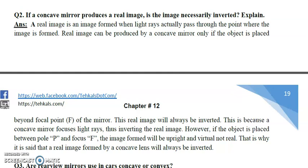The real image formed by a concave mirror will always be inverted. This is because the concave mirror focuses light and inverts it. However, if the object is placed between the pole and the focus, the image formed will be upright and virtual, not real. That is why we say that the real image formed by a concave mirror is always inverted.